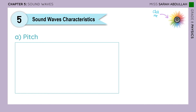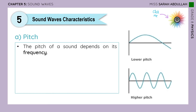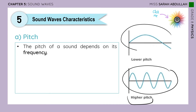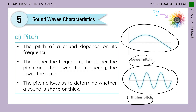We're going to talk about three of those. The first one is pitch. Pitch is a characteristic of sound waves that depends on its frequency. The higher the frequency, the higher the pitch; the lower the frequency, the lower the pitch. Pitch allows us to determine whether a sound is sharp, which is high pitch, or thick, which is low pitch.